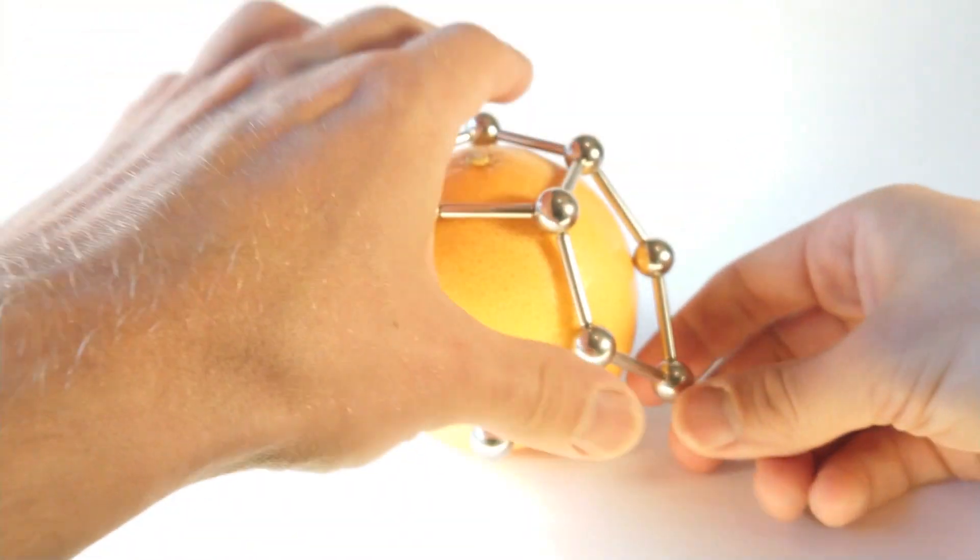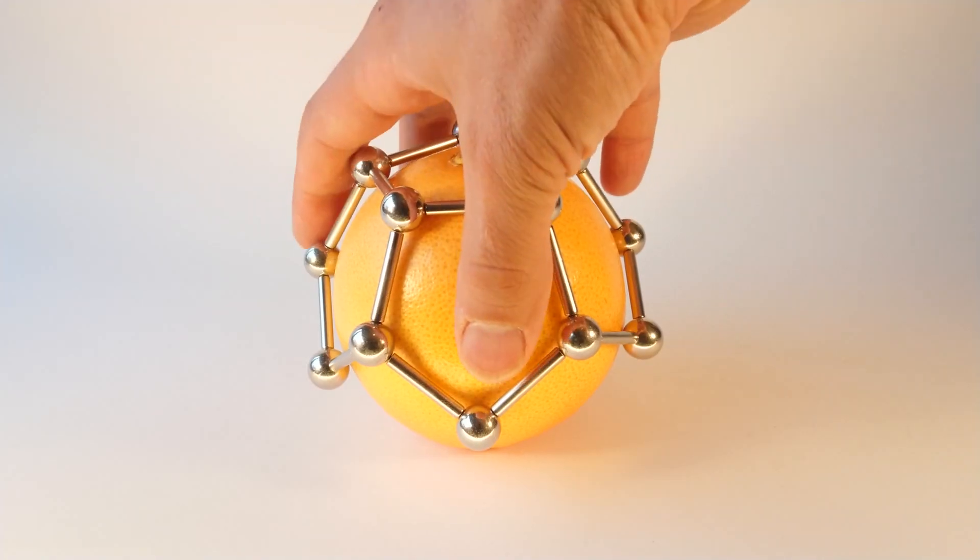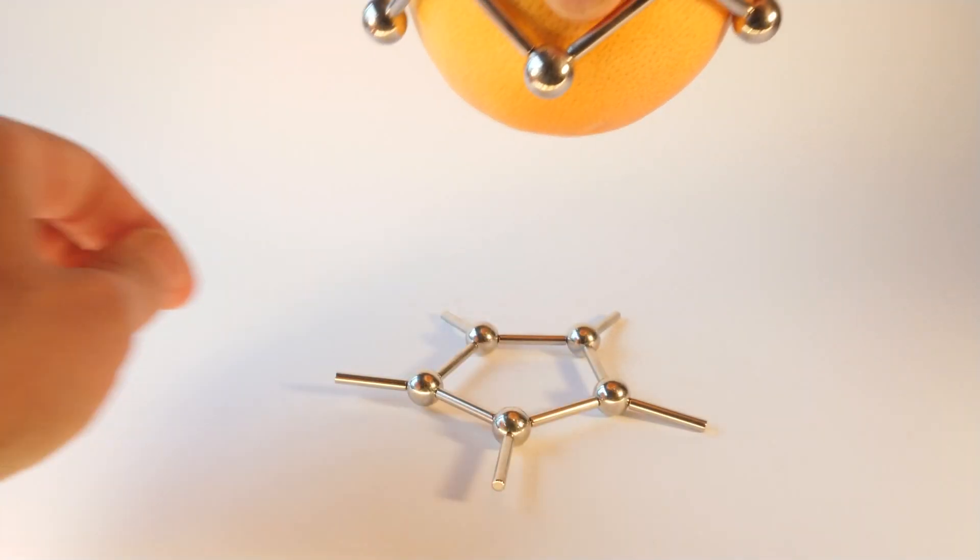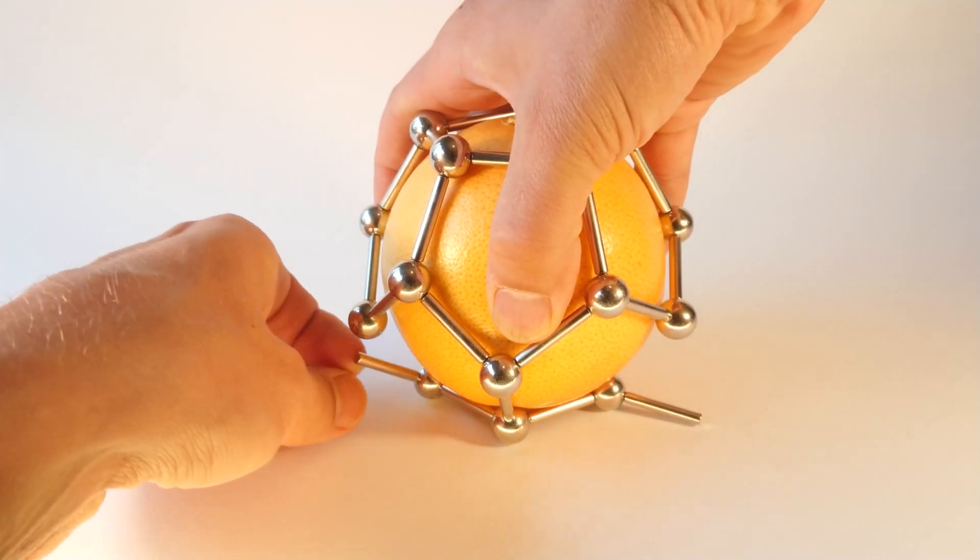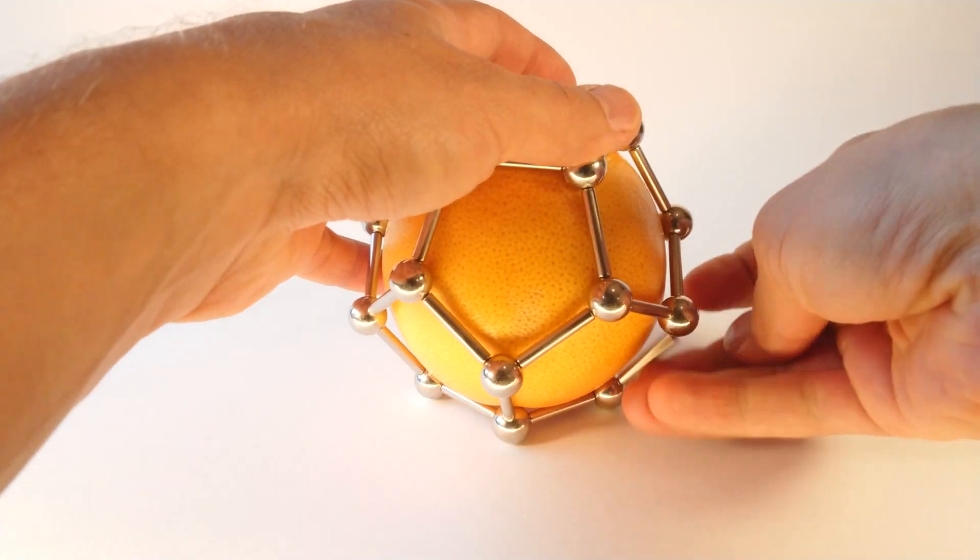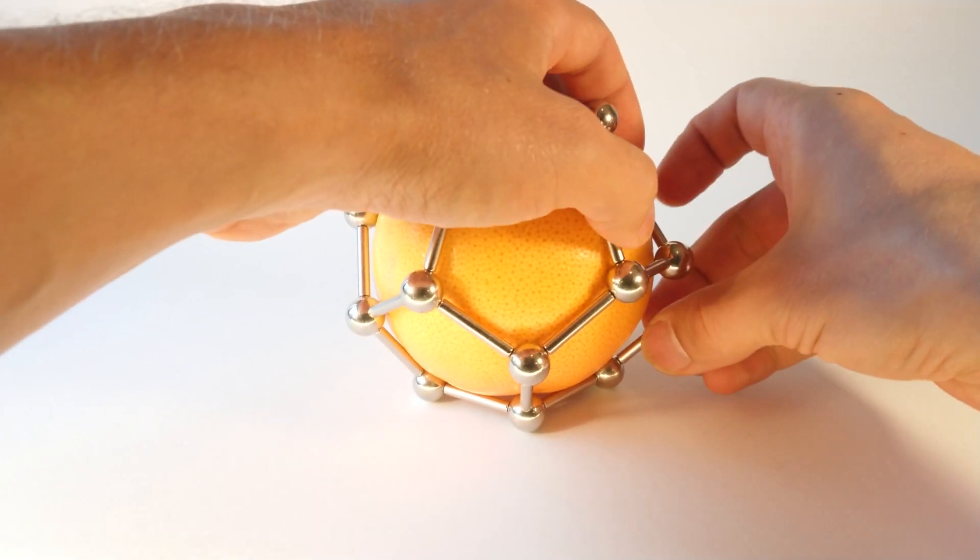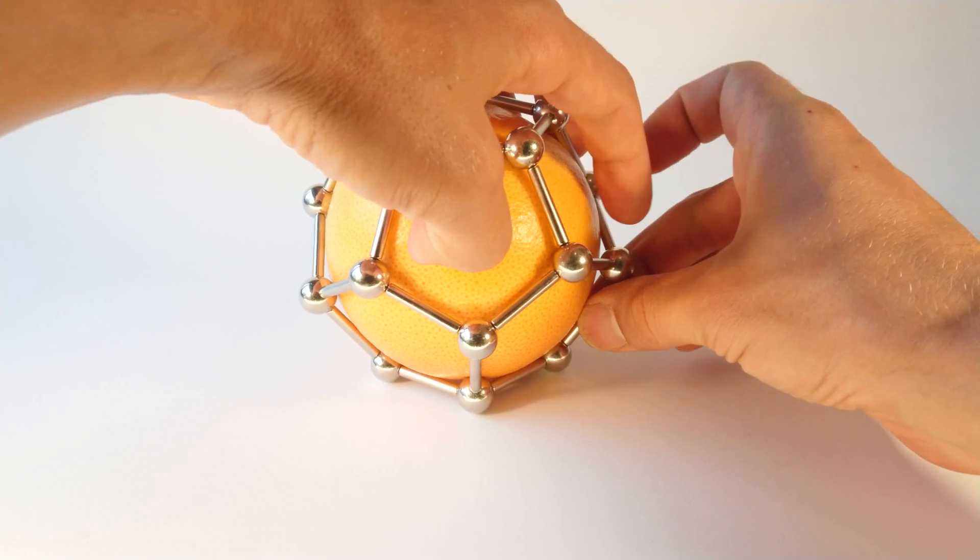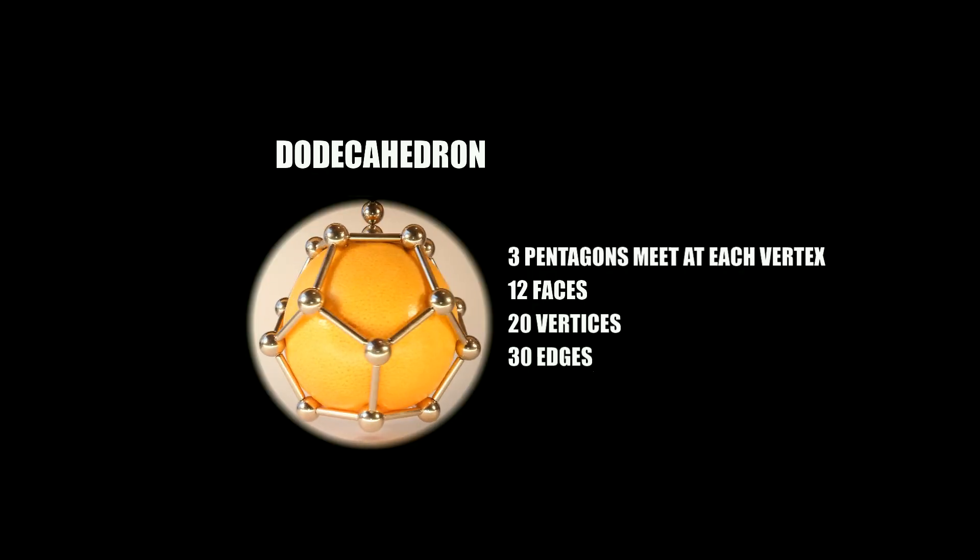Somewhat more intriguingly, in 2003, French and U.S. cosmologists suggested, based on their interpretation of background microwave radiation patterns, that the universe is finite in size and shaped like a dodecahedron.